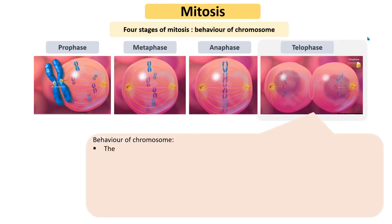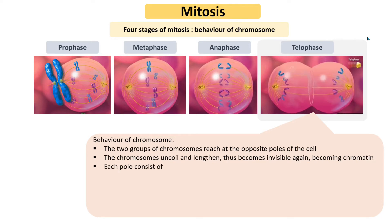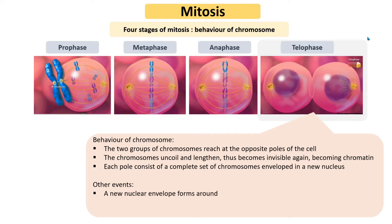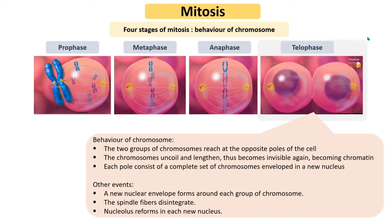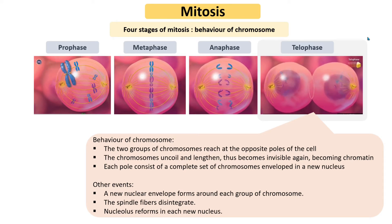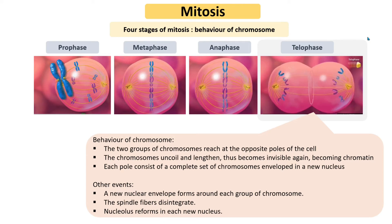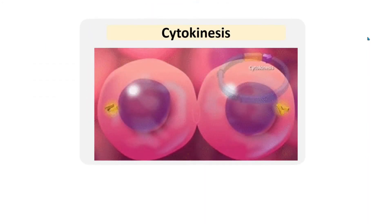In telophase, the two groups of chromosomes reach the opposite poles of the cell. The chromosomes uncoil and lengthen, thus becoming invisible again as chromatin. Each pole consists of a complete set of chromosomes enveloped in a new nucleus. A new nuclear envelope forms around each group of chromosomes, the spindle fibers disintegrate, and a nucleolus reforms in each new nucleus.